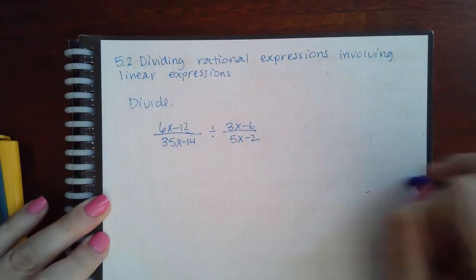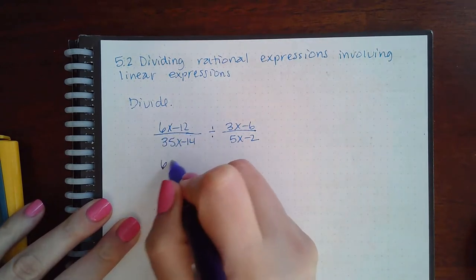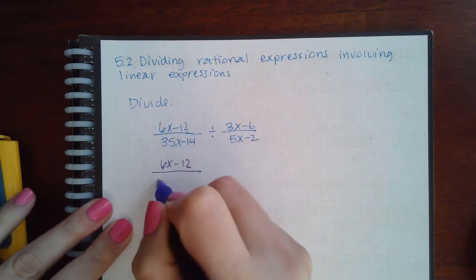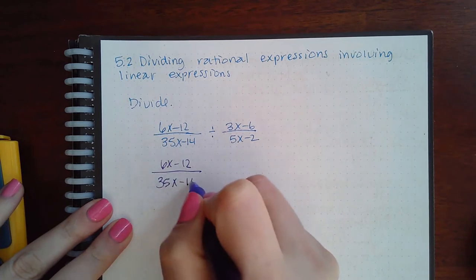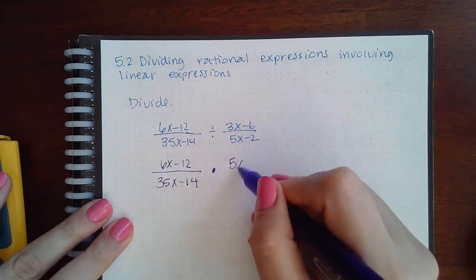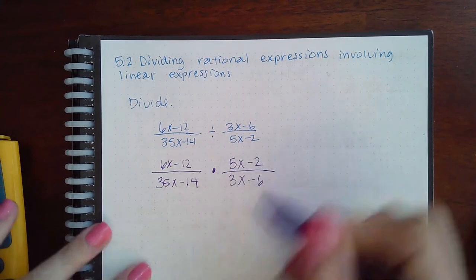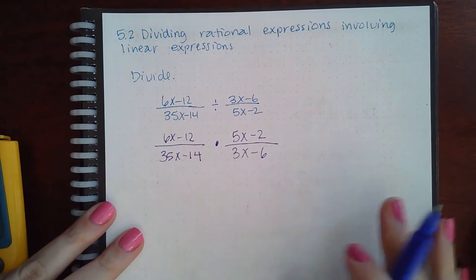We have (6x - 12)/(35x - 14) but then you change it to multiplication and you flip the fraction following that multiplication. Then you have to make sure that you factor each numerator and denominator.